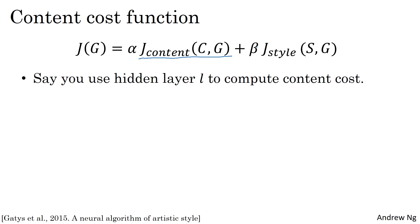Whereas if you use a very deep layer, it's just asking: if there's a dog in your content image, then make sure there's a dog somewhere in your generated image.